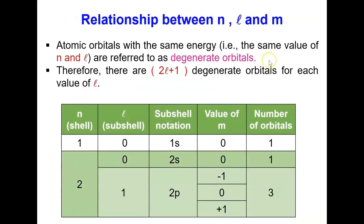Atomic orbitals with the same energy — that is, the same values of N and L — are referred to as degenerate orbitals. There are 2L+1 degenerate orbitals for each value of L. For example, shell N=1 has sub-shell L=0 (1S) with one M value (0), giving one orbital. For N=2, sub-shell 2S has one orbital, and sub-shell 2P (L=1) has three orientations (−1, 0, +1), giving three orbitals.